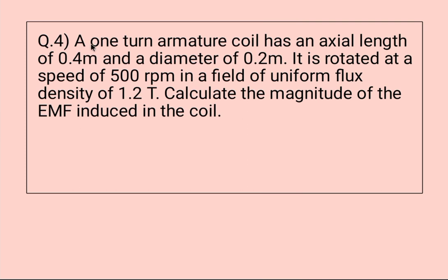Now the last question, question number four. A one-turn armature coil has an axial length of 0.4 meter and a diameter of 0.2 meter. It is rotated at a speed of 500 rpm in a field of uniform flux density of 1.2 tesla. Calculate the magnitude of the EMF induced in the coil.